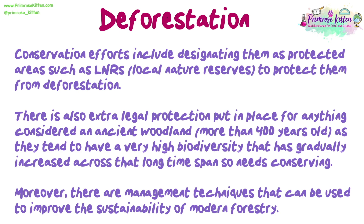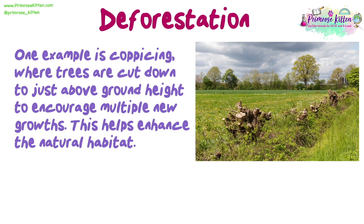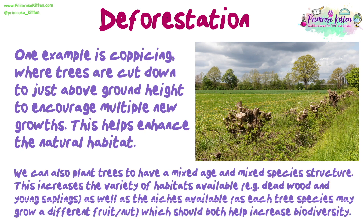There are also management techniques that can improve the sustainability of modern forestry. One example is coppicing, where trees are cut down to just above ground height to encourage multiple new growths, helping enhance the natural habitat. We can also plant trees to have a mixed age and mixed species structure, which increases the variety of habitats available — for example dead wood and young saplings — as well as the niches available, as each tree species may grow different fruit or nuts, helping increase biodiversity.